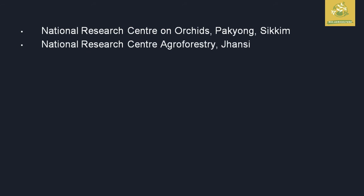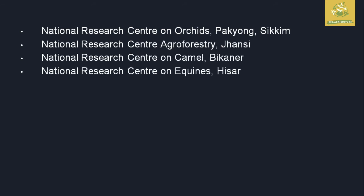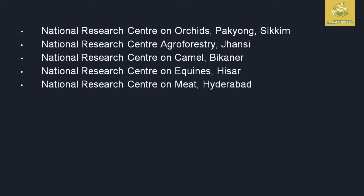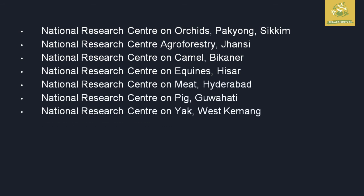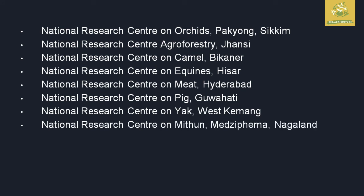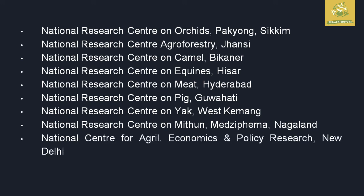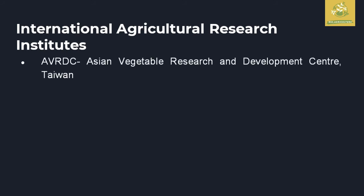Other national research centers include: Agroforestry at Jhansi, Camel at Bikaner, Equipment at Hisar, Meat at Hyderabad, Pig at Guwahati, Yak in West Kameng, and Mithun situated at Medziphema in Nagaland. The center for Agricultural Economics and Policy Research is in New Delhi. These are the 17 national research centers.